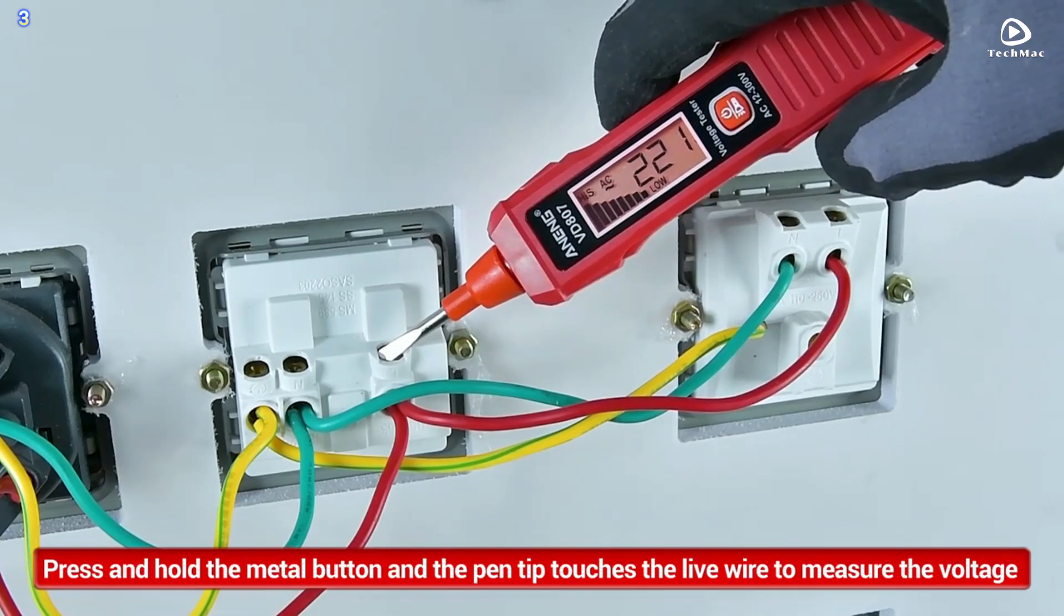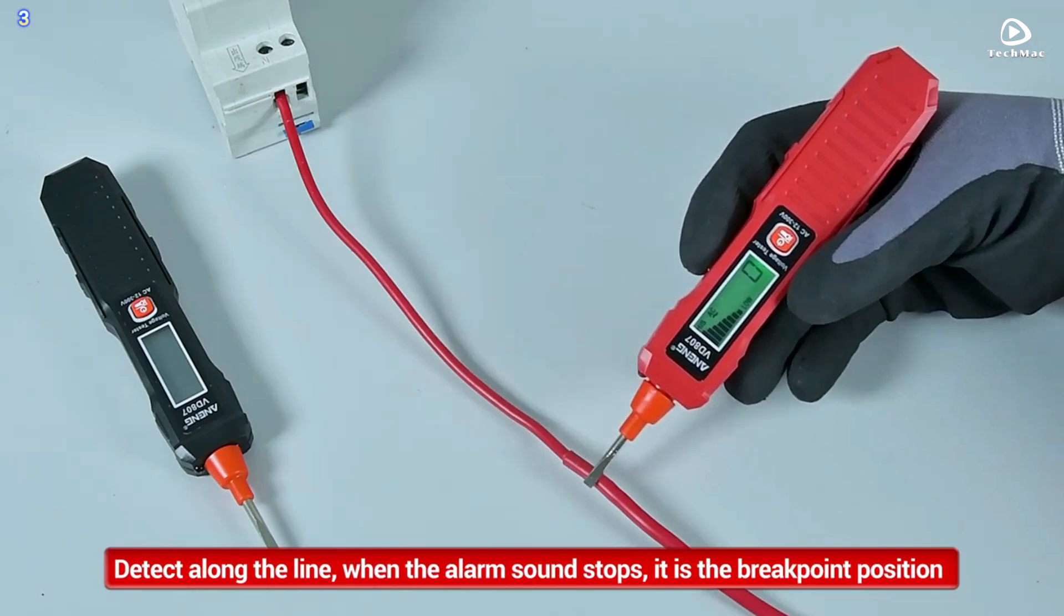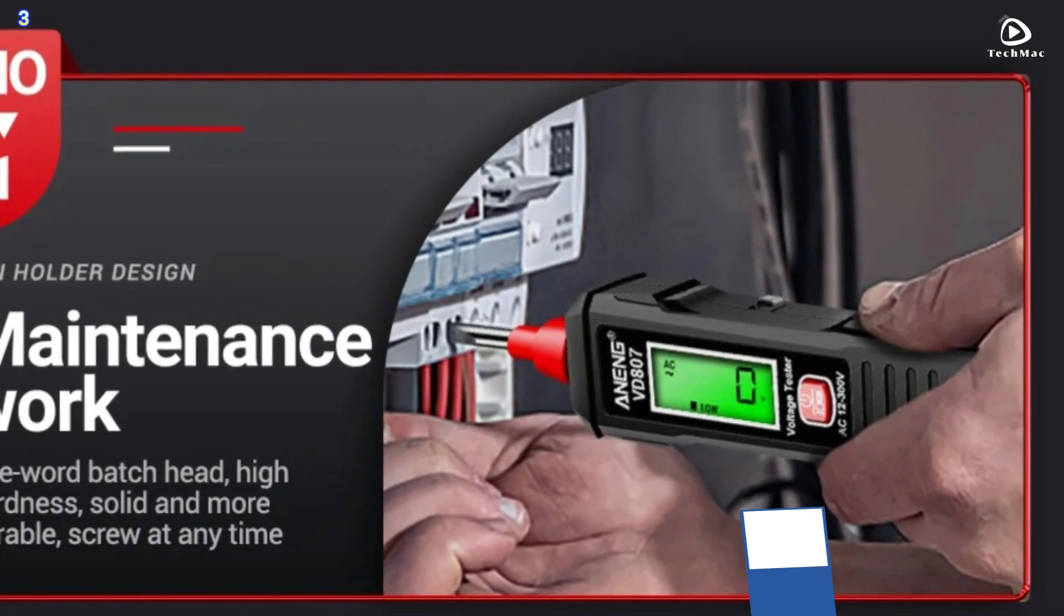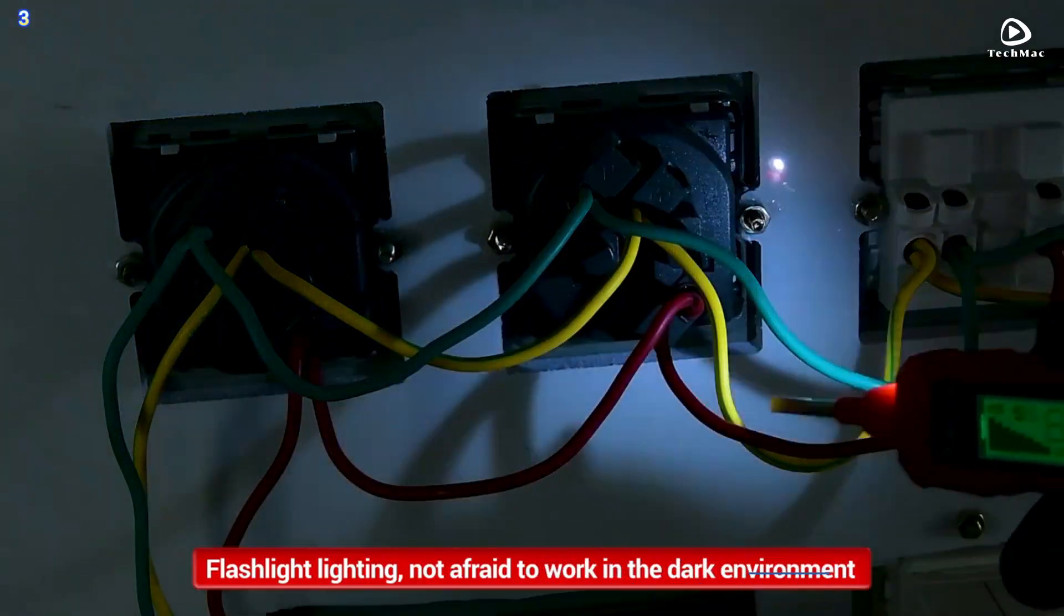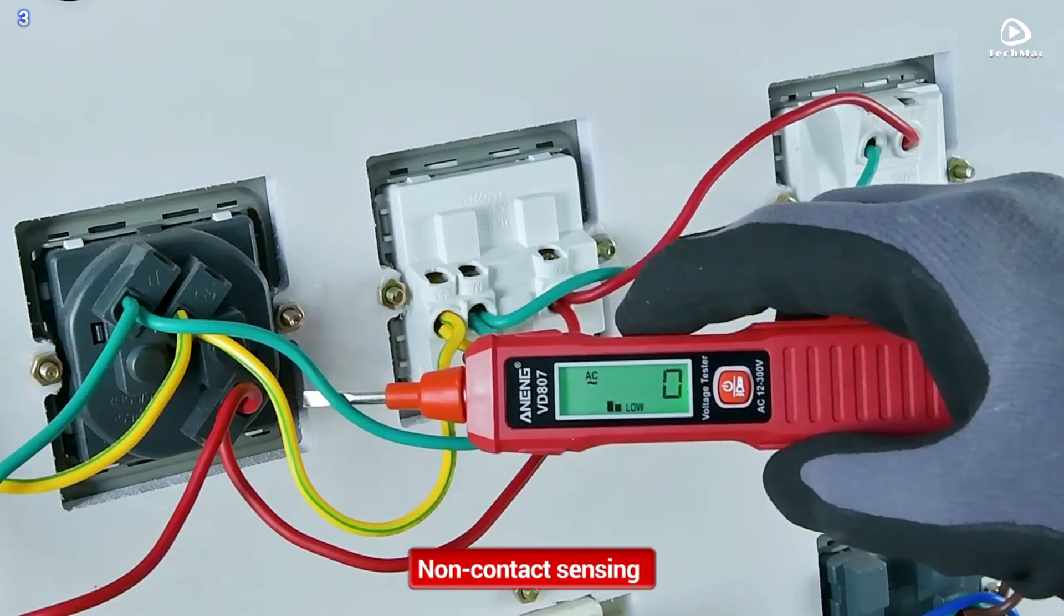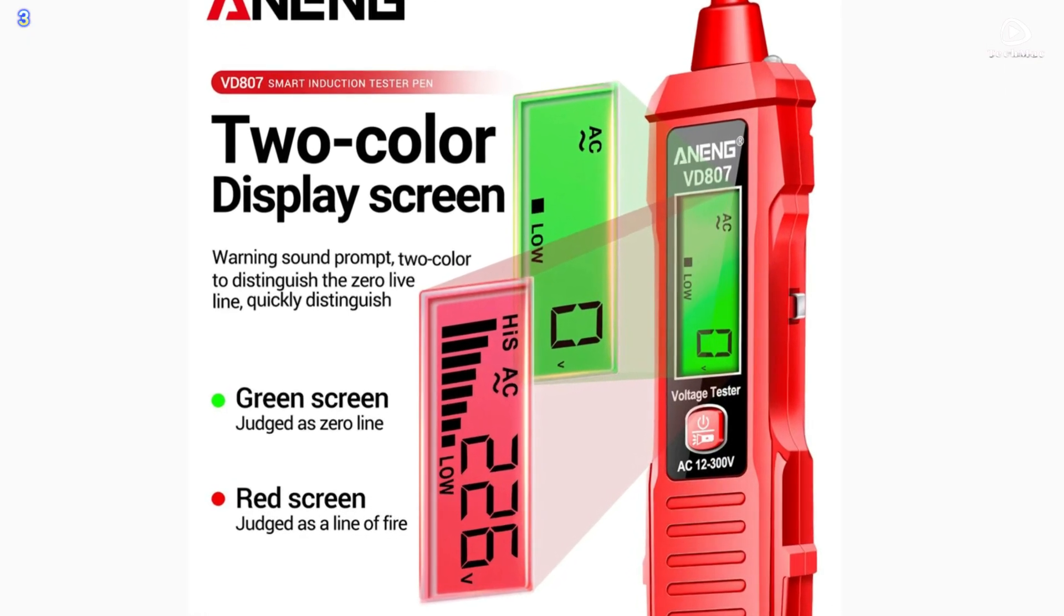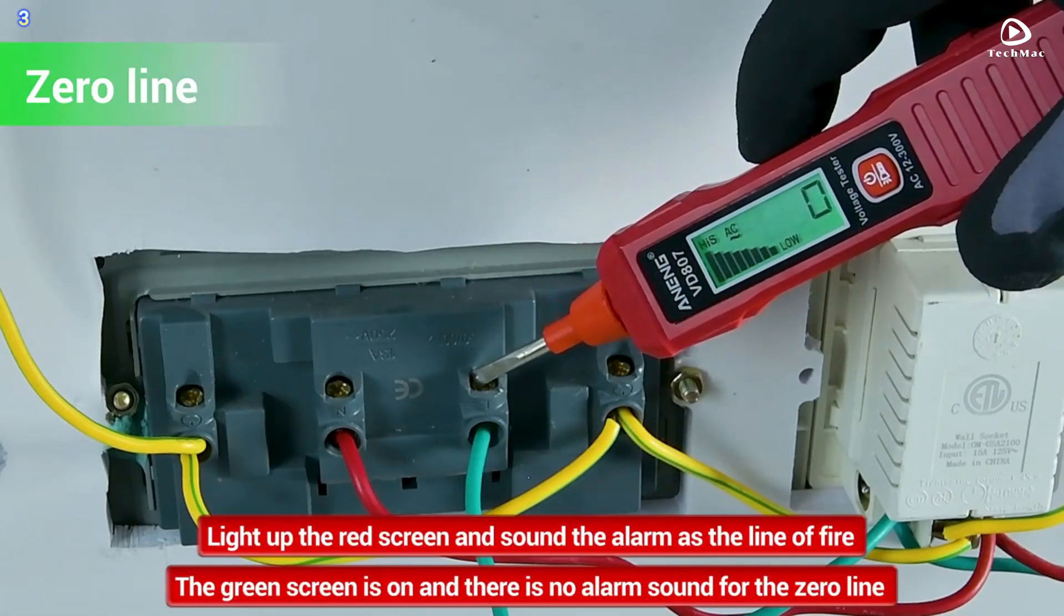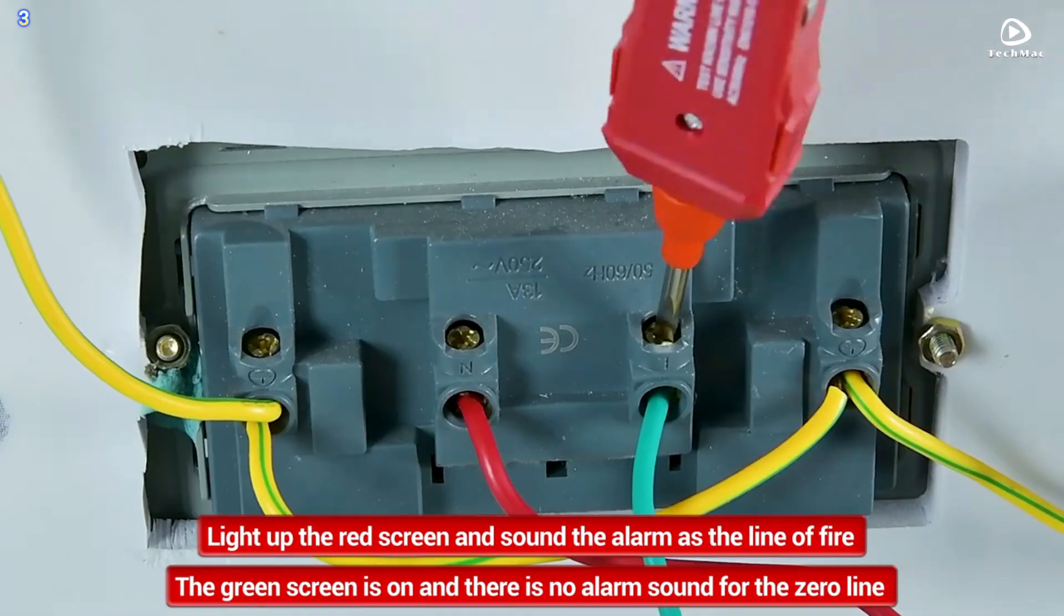LED flashlight lighting function: flashlights, no matter what environment, can be illuminated to prevent the danger of electric shock. Line breakpoint detection: breakpoint measure along the road detection, screen index grid to high and buzzer alarm to the line disconnection position, index grid is low. Two-color display screen: two-color screen warning sound prompt, two-color to distinguish the zero live line, quickly distinguish.